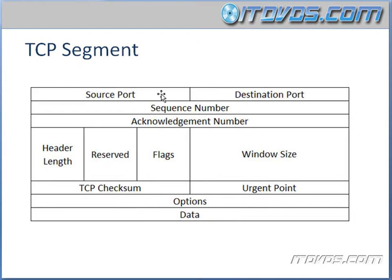Now let's take a closer look at an actual TCP segment. First, we have the source port. This is the port that TCP chooses to send from, and it's going to be 1024 or above, because 1 through 1023 are reserved. The source port is important because when we send a segment to our destination and the destination responds, its destination will be whatever our source port was.